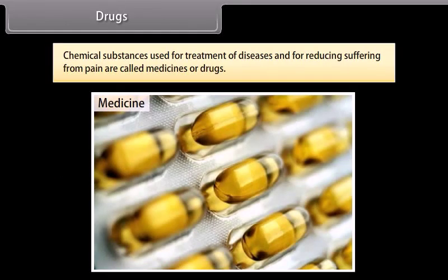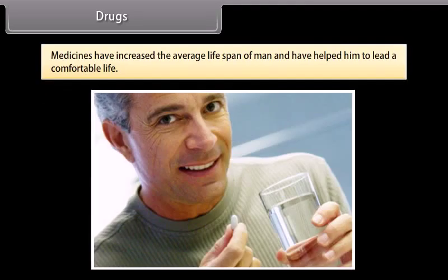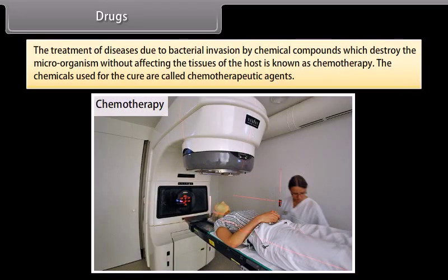Chemical substances used for treatment of diseases and for reducing suffering from pain are called medicines or drugs. Use of chemical compounds as medicines has helped humanity in many ways — to cure diseases, reduce suffering from pain, check population explosion, and increase the average lifespan of man. The treatment of diseases due to bacterial invasion by chemical compounds which destroy microorganisms without affecting the tissues of the host is known as chemotherapy, and the chemicals used are called chemotherapeutic agents.